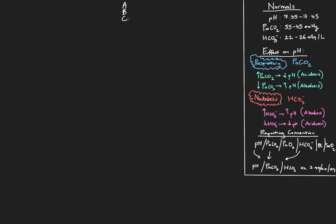In the previous videos I've done on examples, I've kind of been ignoring this compensation part. I did that because I really wanted us to get the primary classification of the blood gas really nailed in and well understood. Now that we're able to easily identify that primary disturbance and what effect it has on the pH, we're going to see whether or not there's any compensation by the non-primarily affected part of the blood gas. In these examples, we're going to start to look at compensation as well as the rest of the classification we've already been doing.